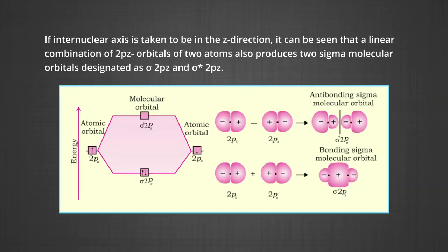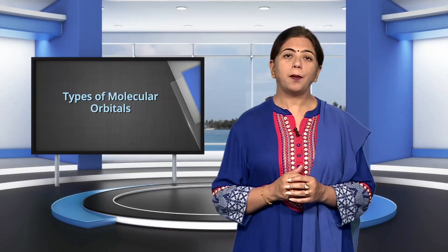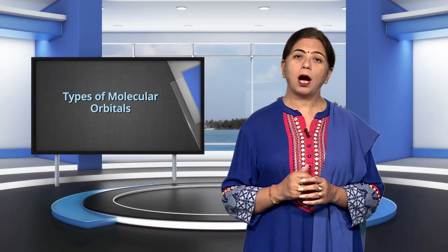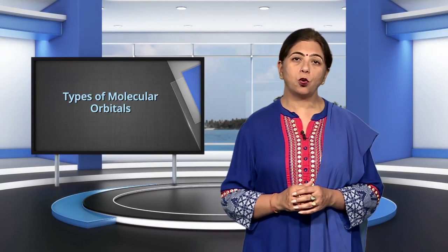If the internuclear axis is taken to be in the z-direction, a linear combination of 2p_z orbitals of two atoms also produces two sigma molecular orbitals, designated as σ2p_z and σ*2p_z. Molecular orbitals obtained from 2p_x and 2p_y orbitals are not symmetrical around the bond axis, due to the presence of positive lobes above and negative lobes below the molecular plane. Such molecular orbitals are labeled as π and π*. A π bonding molecular orbital has larger electron density above and below the internuclear axis, while the π* anti-bonding molecular orbital has a node between the nuclei.